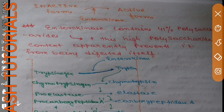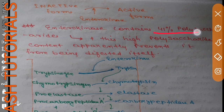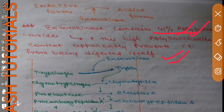Enterokinase converts inactive forms of enzymes to active forms. An important point about enterokinase is that it contains 41% polysaccharide, and this high polysaccharide content apparently prevents it from being digested. This is significant because there are many proteolytic enzymes present in the duodenum coming from pancreatic juice that could otherwise digest enterokinase.